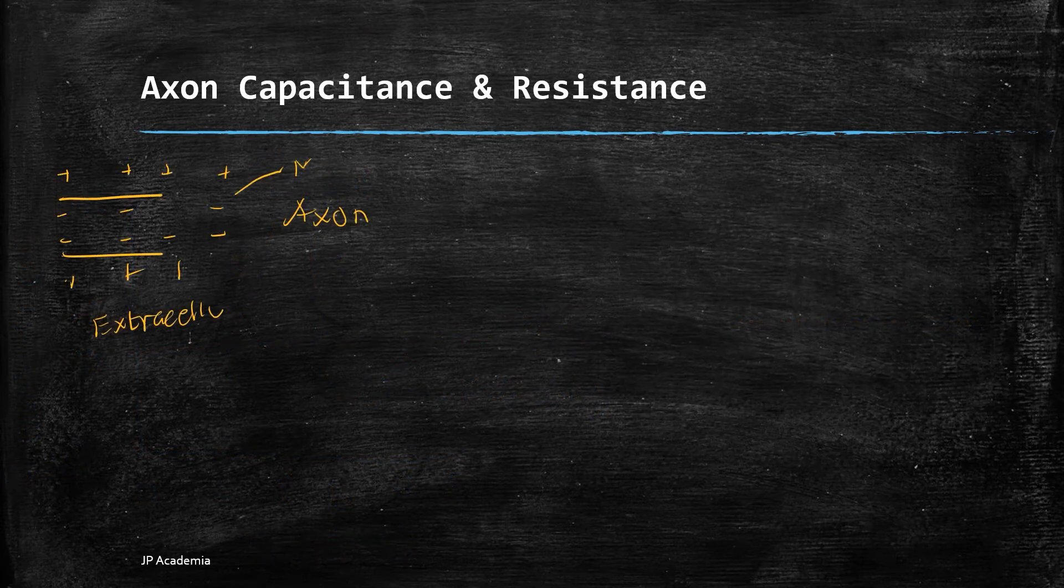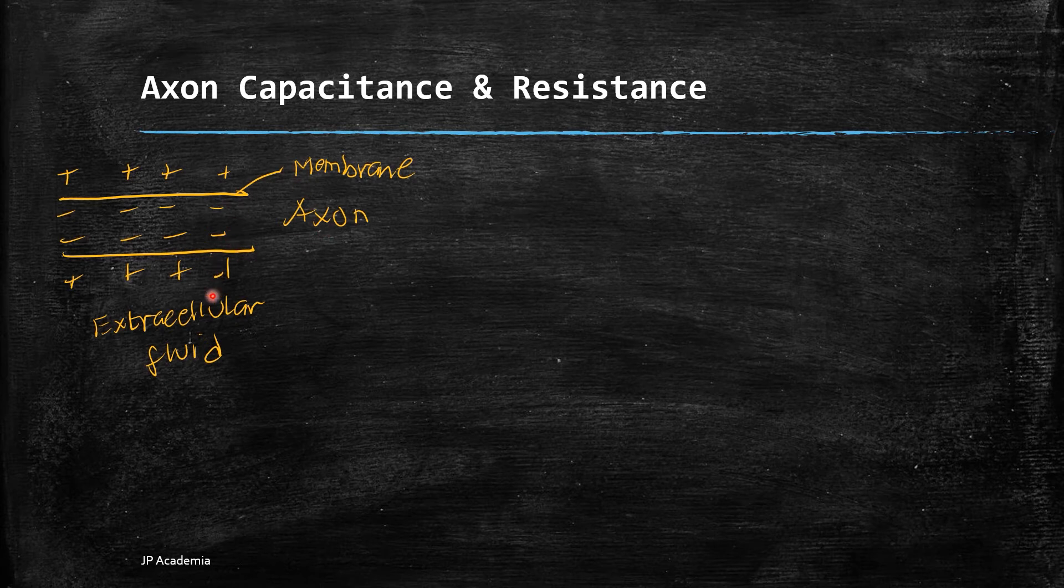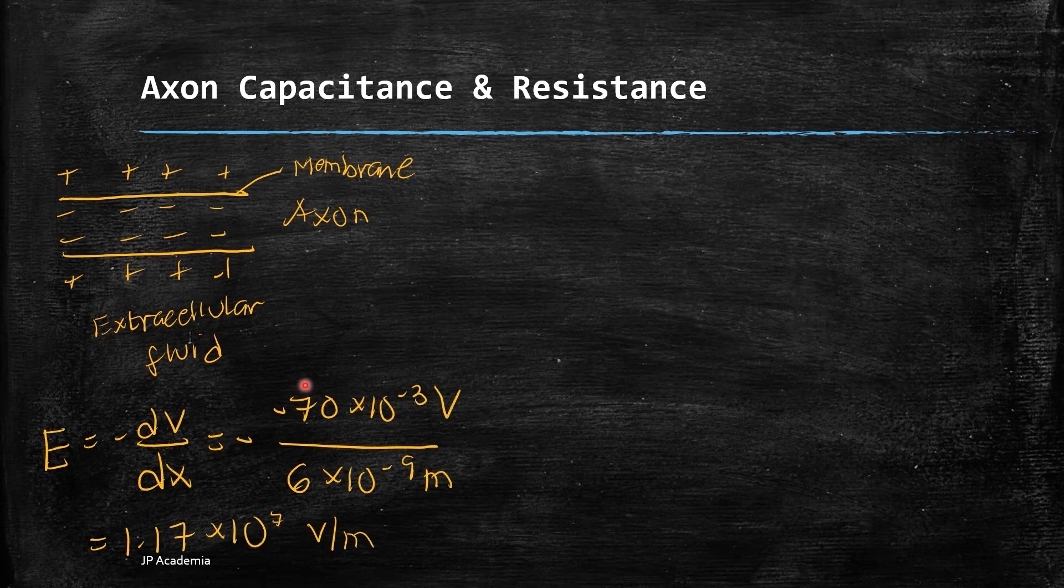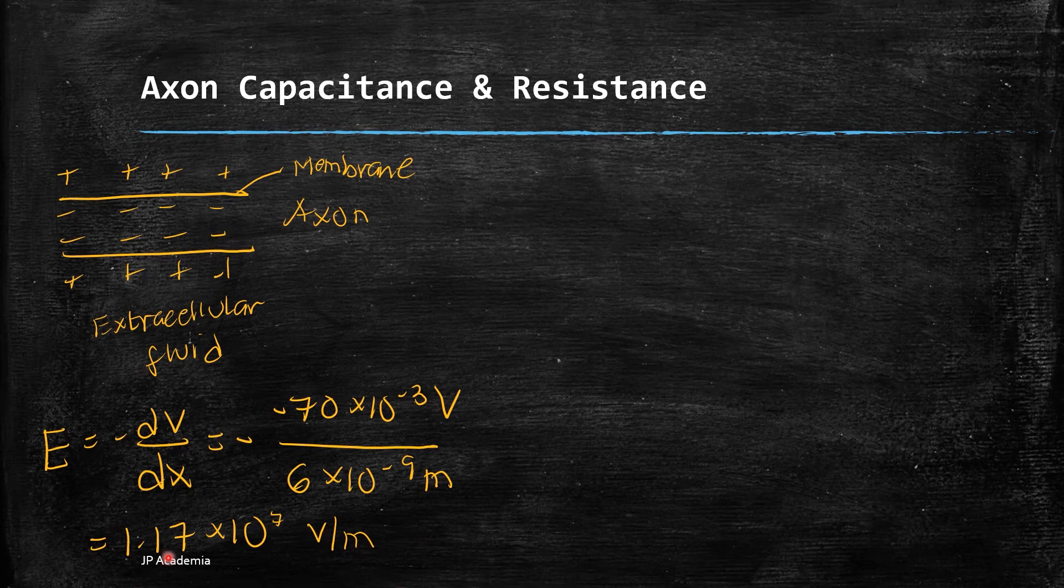We have now established that the potential difference is present due to the selective diffusion of positive ions through the membrane, which creates an increase of positive charges outside the cell. An electric field is also present. Given the resting potential of about -70 millivolts present on a given cell membrane thickness of 6×10⁻⁹ meters, we have this electric field magnitude.